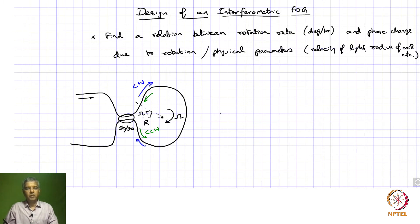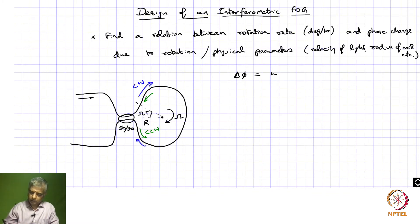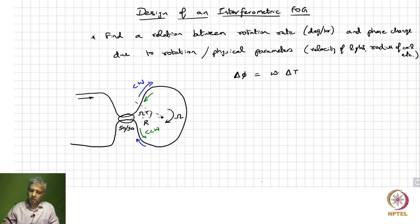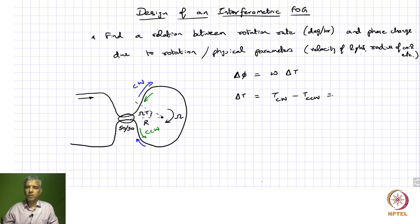The round trip time actually differs between the clockwise and counterclockwise waves. We had an expression for delta phi as omega times delta T, where delta T is the change in round trip time for the clockwise and counterclockwise waves. So delta T equals T_CW minus T_CCW. The round trip time for the CW wave without any rotation corresponds to the circumference of the coil divided by the velocity with which the wave propagates, which is 2 pi R over V_G.